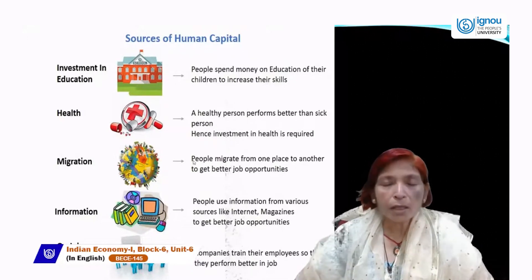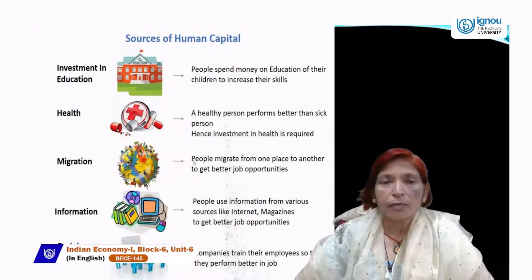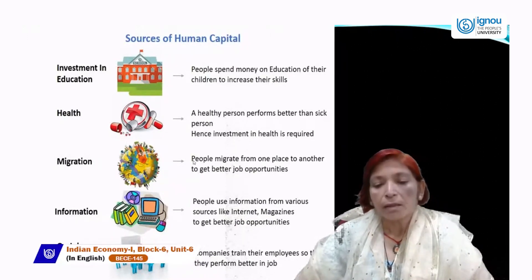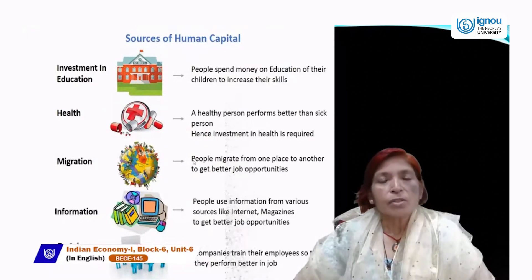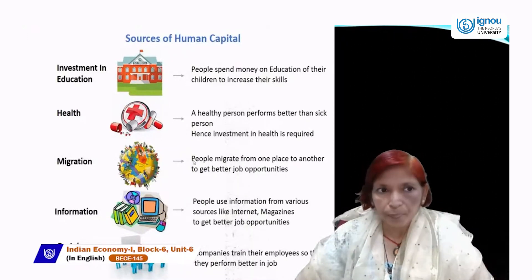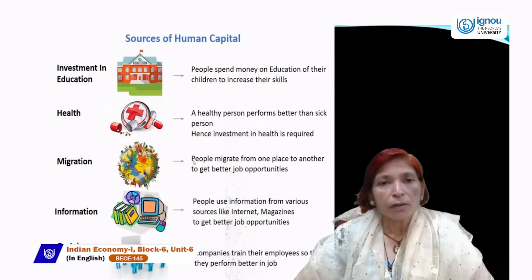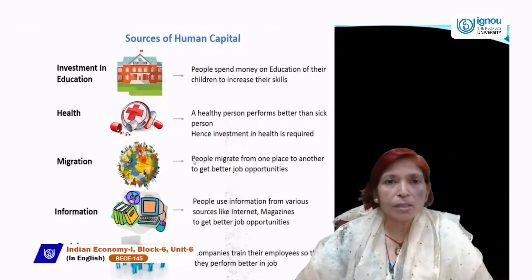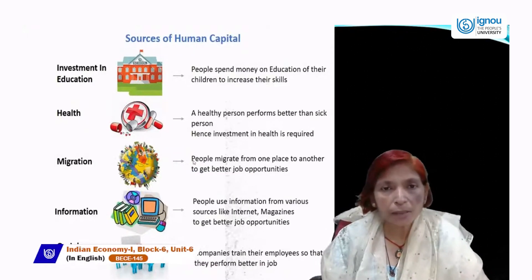Next is On-the-Job Training. On-the-Job Training means when people get training while doing their jobs, or when companies train their employees so they perform better. So these five sources — Education, Health, Migration, Information, and On-the-Job Training — are included in Human Capital Formation, and without any one of them, we can't make good Human Capital Formation.